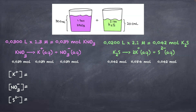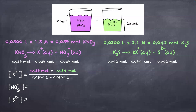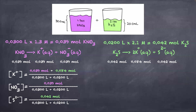Sometimes the same ion exists in both solutions. In this case, the first solution (in pink) and the second solution (in green) both have K⁺. To find the concentration of K⁺, we add the moles together: 0.039 moles from the first solution plus 0.084 moles from the second, then divide by the total volume of 50 mL (0.050 L). For NO₃⁻, it only comes from the first solution — 0.039 moles divided by total volume. S²⁻ comes from the second solution: 0.042 moles divided by total volume. This gives the concentration of each ion in the final solution.